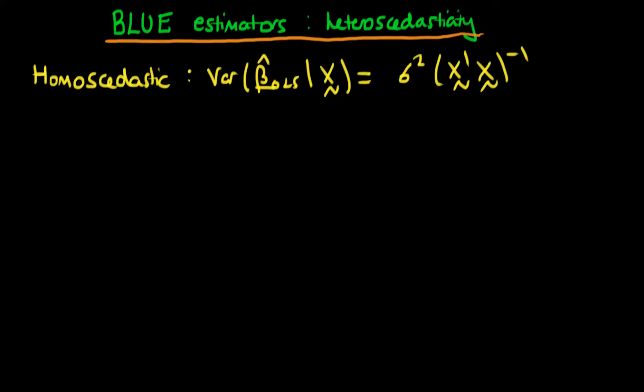In this video we're going to continue our discussion as to how we can derive BLUE estimators in the presence of heteroscedasticity by deriving the variance of OLS estimators in the presence of heteroscedasticity. Remember in the last video we derived the variance of OLS estimators in the presence of homoscedastic errors and found it was equal to sigma squared times x prime x all to the power minus one.